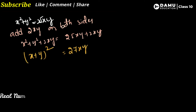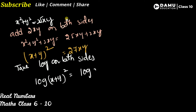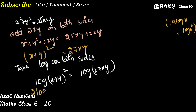Taking logarithm on both sides: log(x + y)² = log(27xy). Using the formula a·log x = log(x^a), the left side gives 2·log(x + y) = log(27xy).